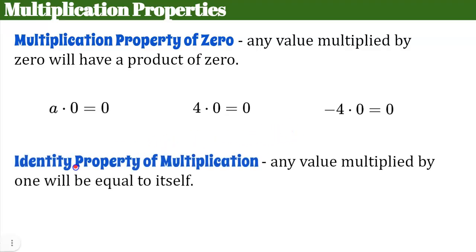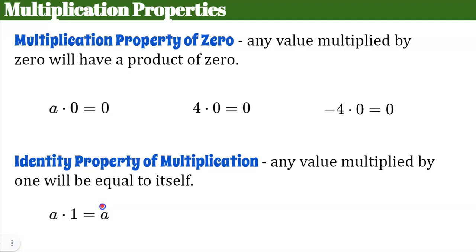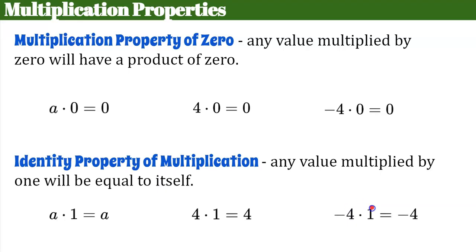Another property that comes in handy is the identity property of multiplication, which states that any value multiplied by one will be equal to itself. Algebraically: a × 1 = a. For example, 4 × 1 = 4, and -4 × 1 = -4.